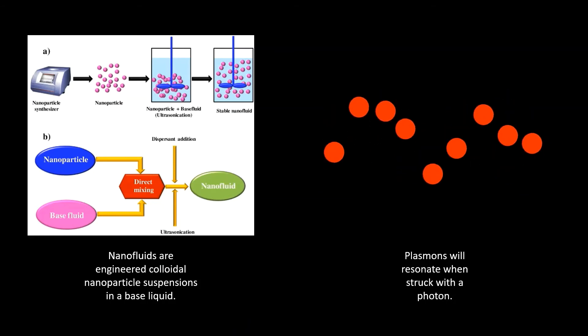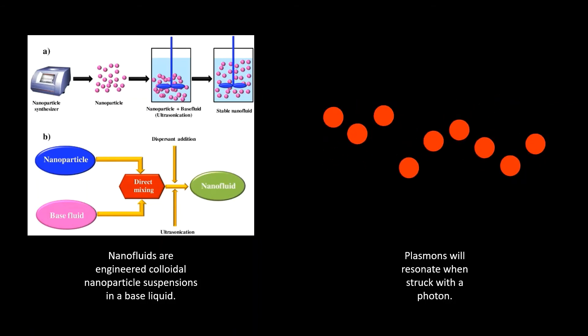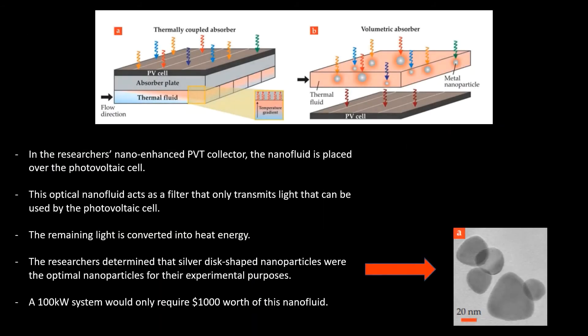Therefore, we can tune what light energy we want the nanoparticles to absorb and what light energy we want them to transmit. Therefore, if a specifically designed nanofluid layered on top of a photovoltaic cell only transmitted the light that could be converted into electricity by the photovoltaic cell, the excess light would be absorbed by the nanoparticles and released as heat into the surrounding fluid, which then in turn could be collected as useful energy. Thus, the photovoltaic and thermal components could remain separate to increase the energy collector's efficiency while lowering its overall cost.